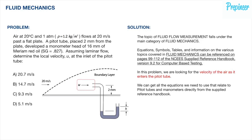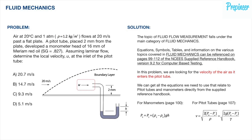In this problem, we are looking for the velocity of the air as it enters the pitot tube. We can get all the equations we need relating to pitot tubes and manometers directly from the NCES supplied reference handbook. Specifically, for manometers reference page 100, and for pitot tubes reference page 107.